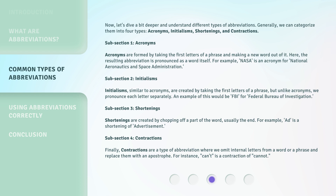Finally, contractions are a type of abbreviation where we omit internal letters from a word or phrase and replace them with an apostrophe. For instance, CAN'T is a contraction of CANNOT.